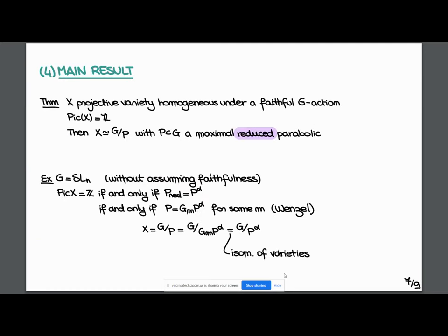The main result, the main theorem is: we fix a projective variety homogeneous under a faithful G action. The faithfulness assumption does not impact the classification of varieties. If the action is not faithful, we replace G by its image in the automorphism group. Then we assume the Picard group is isomorphic to Z. Then we can show the variety is isomorphic to G over P with P a maximal reduced parabolic. Here I have not put any assumption on characteristic. In characteristic zero, it is trivial because any parabolic is smooth. By Wenzel's theorem, we just add a Frobenius kernel. So there is an isomorphism of variety with a parabolic subgroup which is reduced as a stabilizer. The non-trivial part is to prove this in very small characteristic.